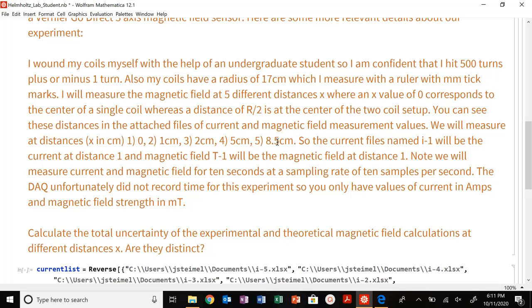That last measurement is at the center of our apparatus, R over two. So the current files will be named I dash one, and that will be the current at distance one. So where X is equal to zero magnetic field T1 will be the magnetic field at distance one.